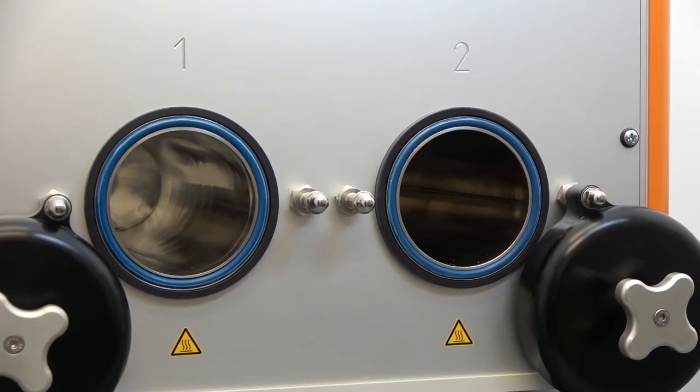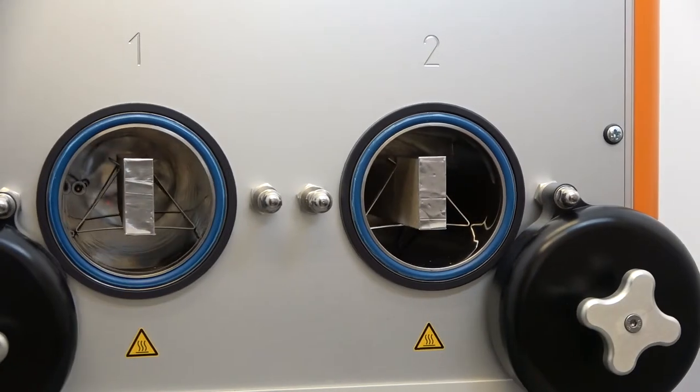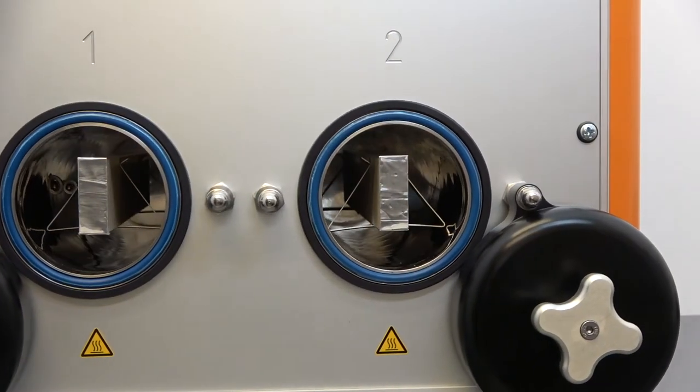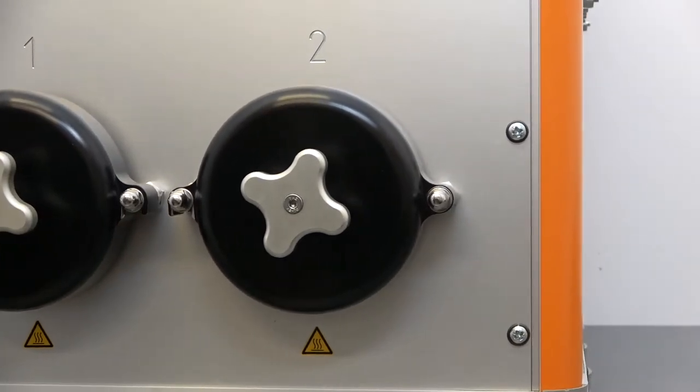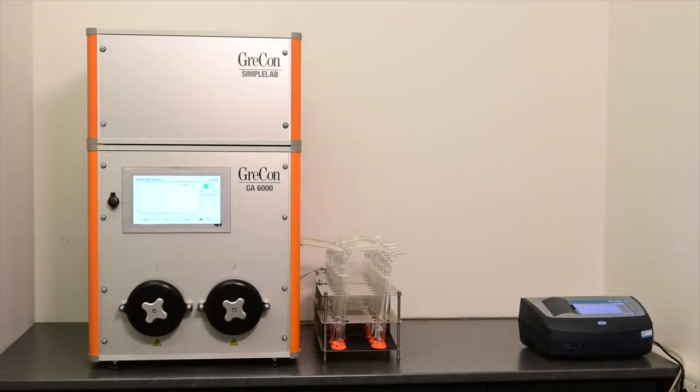The GA-6000 has two heated test chambers. One test specimen of the same sample will be placed in each chamber. Both chambers are purged by purified air for removing the formaldehyde released by the test specimen.